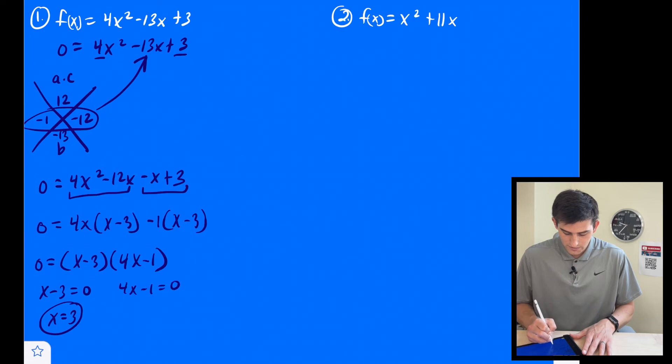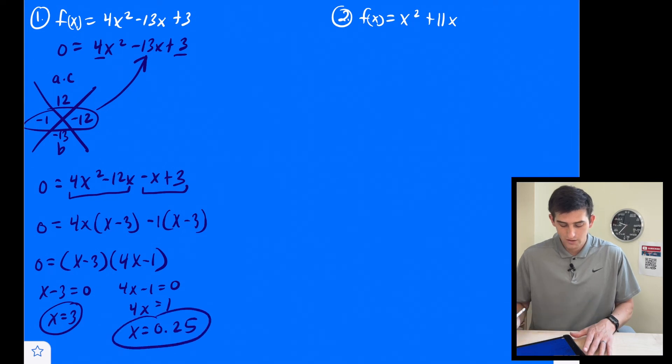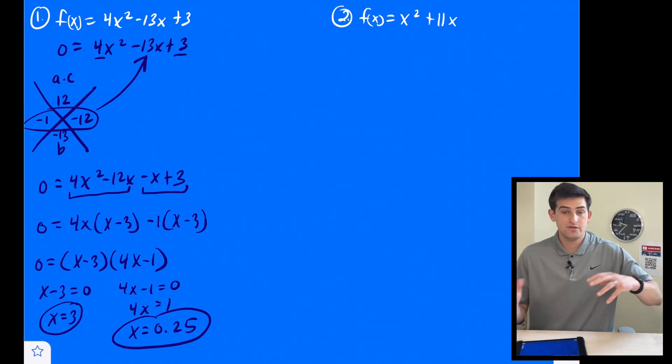And here we have 4x - 1 = 0. So we can add that one and divide by four. And we get x is equal to one fourth, or 0.25. Okay, so those are our two zeros of the function.